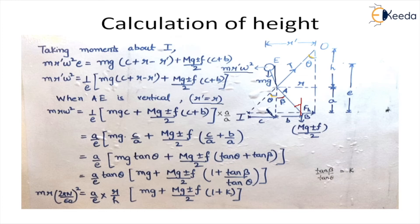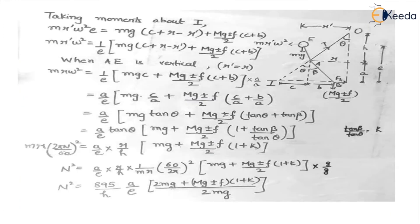And Mr Omega square. Omega we know is 2pi N upon 60. So we replace in the equation. We keep N square on one side. Take all the factors on the other side. You place the values of 2pi G 60. You calculate it. And you multiply the whole equation by numerator and denominator by G. So the final result that we get is N square is equal to 895 upon H into A upon E.